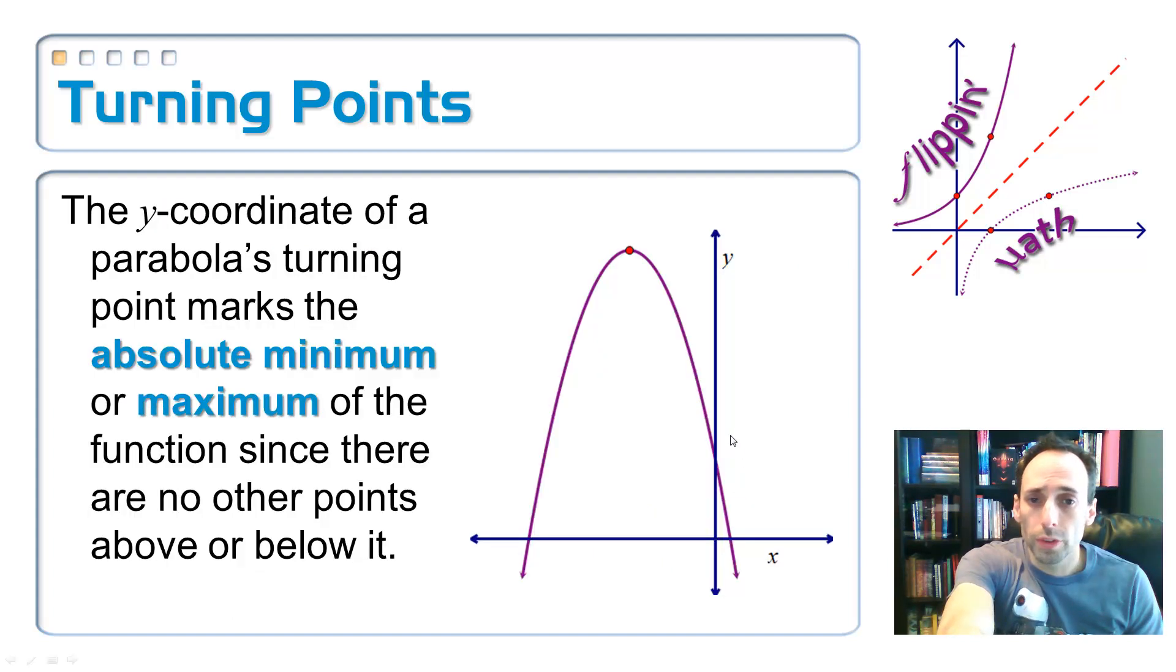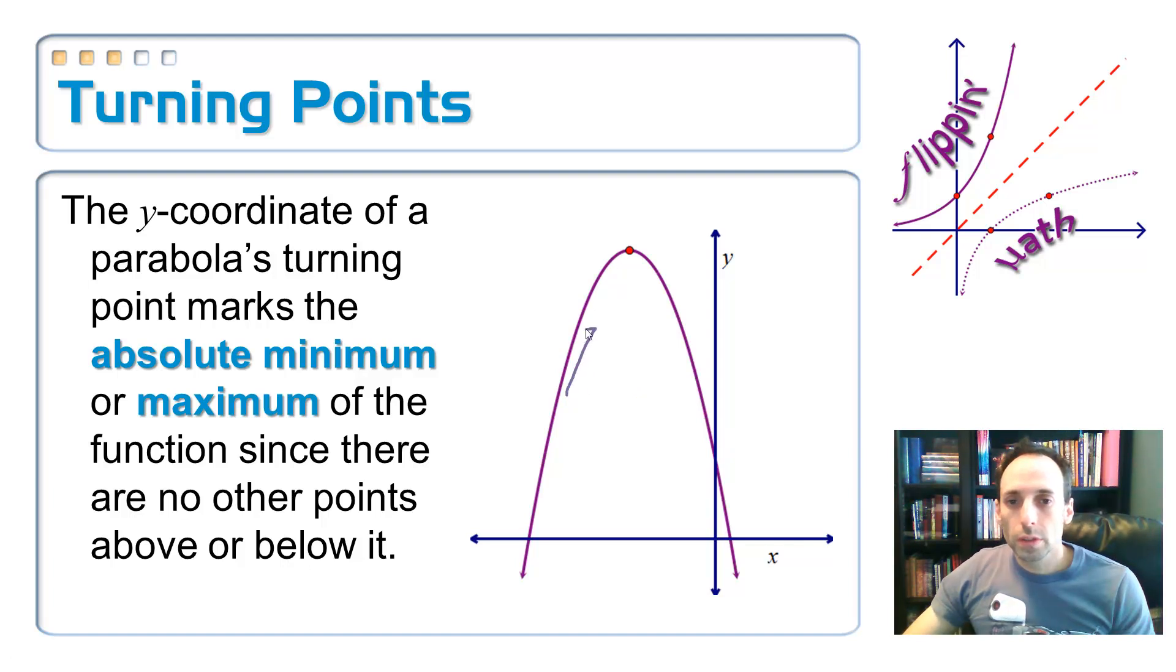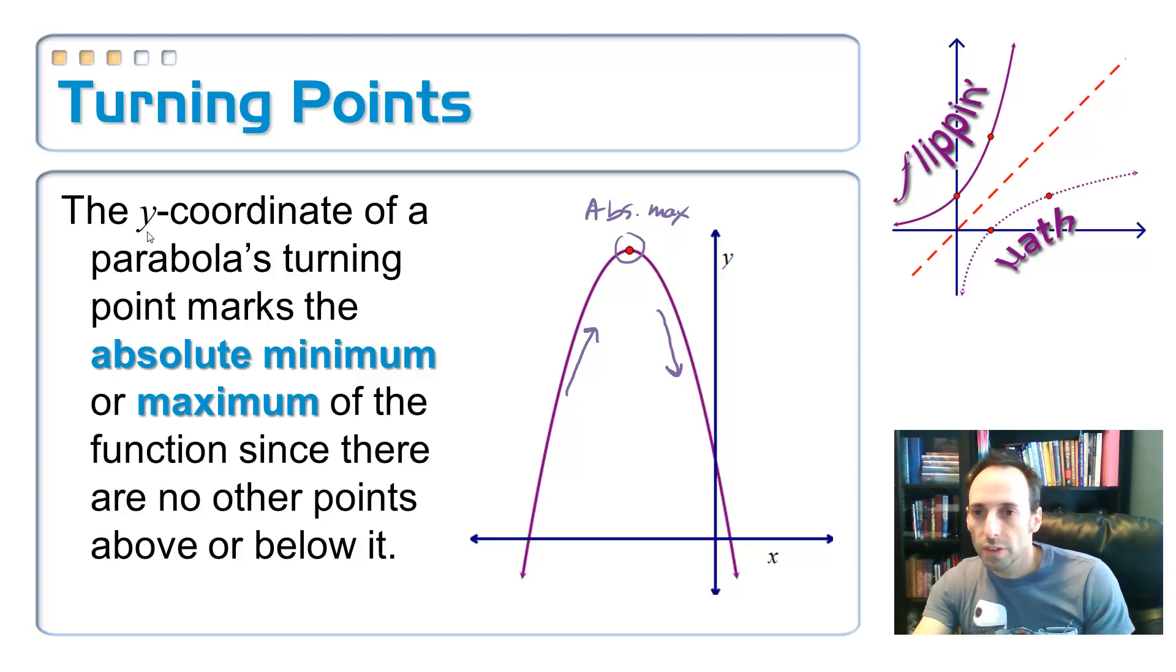I could flip this thing around, and now from left to right, it is increasing, and then it reaches the turning point, the vertex in this case, and then starts decreasing again. So this vertex for a parabola always marks the minimum or the absolute minimum or absolute maximum for the graph. Here we have an absolute maximum because there are no points on the graph that are higher than that. And remember, it's specifically the y-coordinate that is the absolute maximum or minimum point.